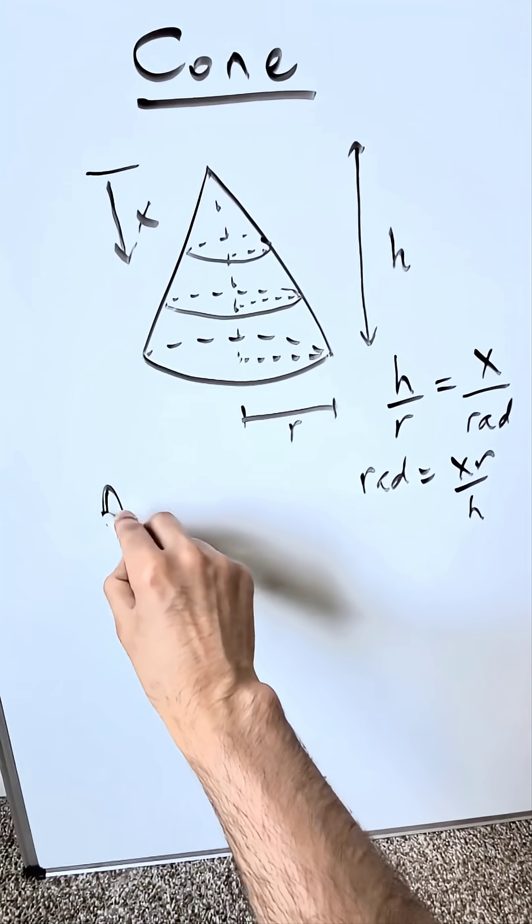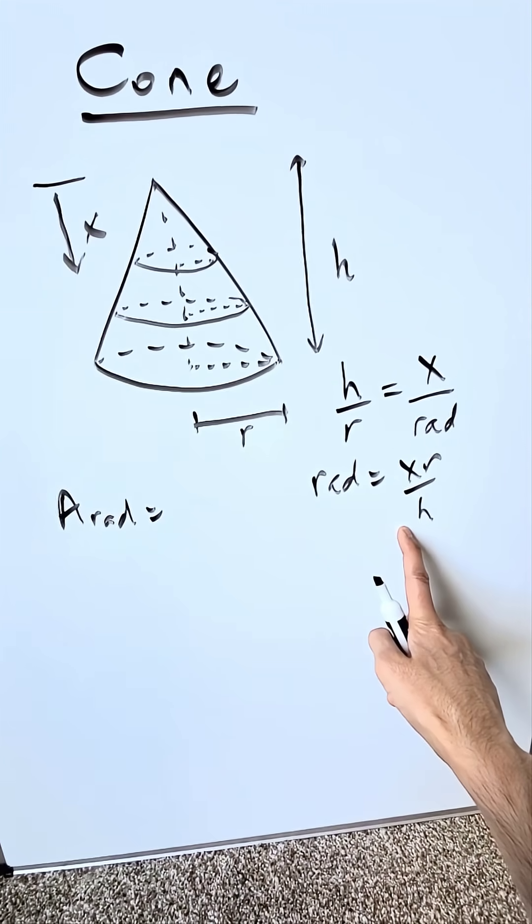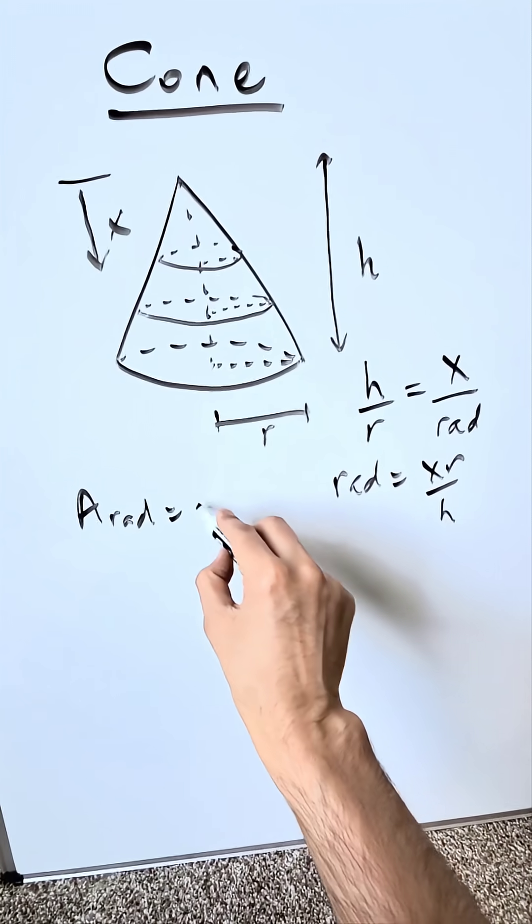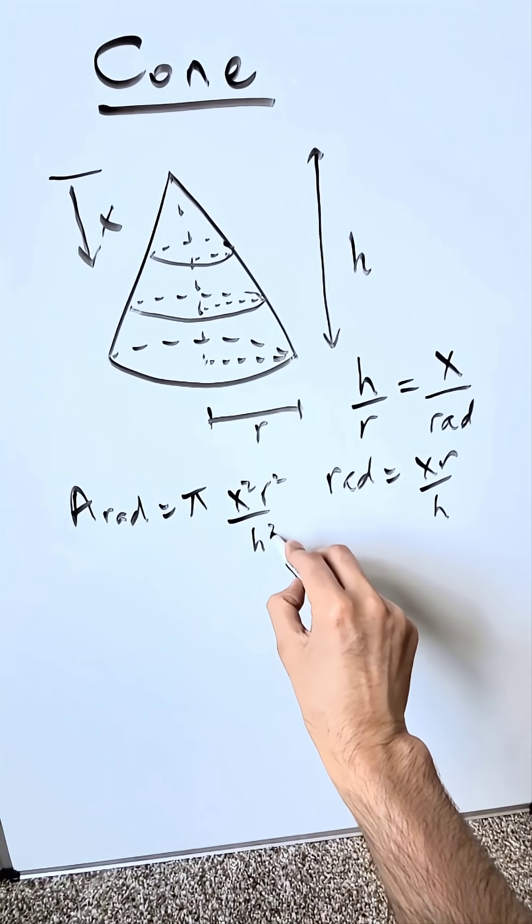You know the area of the slice at that given radius is going to be this squared times pi, pi r square. You'll have a pi x square r square over h square.